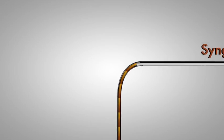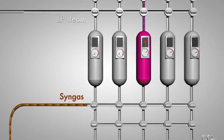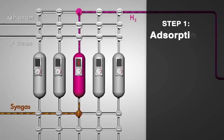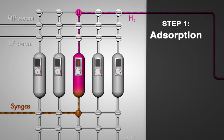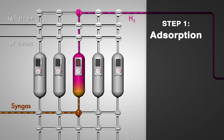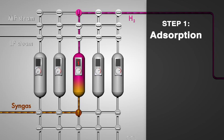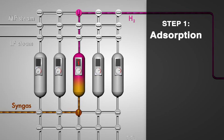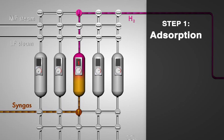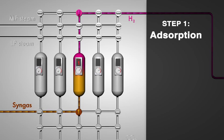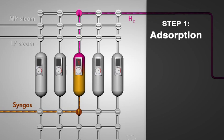In the first step of the cycle, the syngas passes through a reactor while the sorbent material takes up the CO2. The CO and the steam react, producing CO2 and hydrogen. The sorbents also take up the newly produced CO2. In this way, all the CO and CO2 is separated and only hydrogen gas remains.